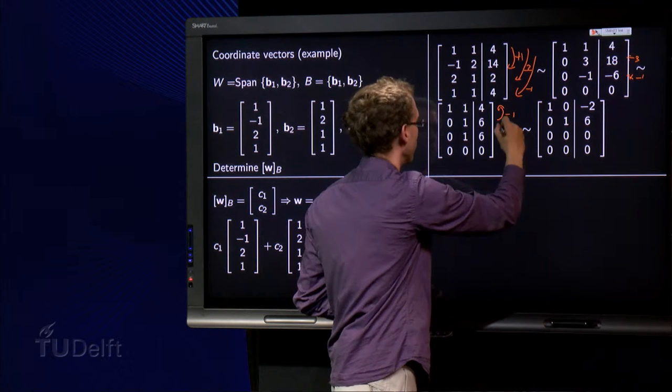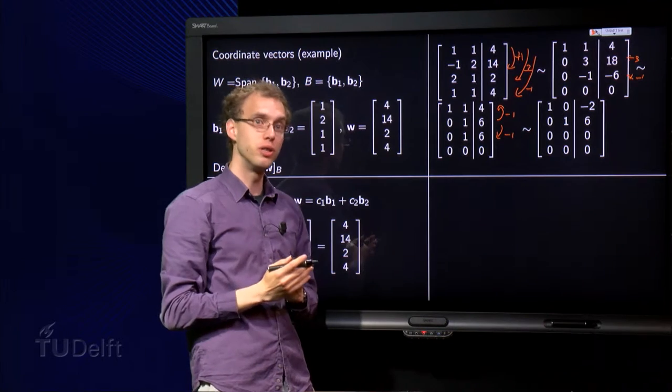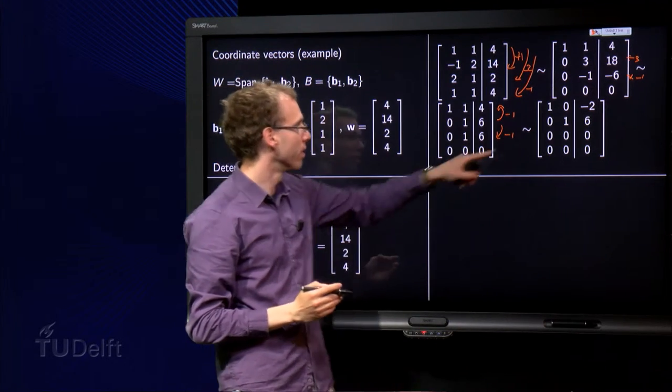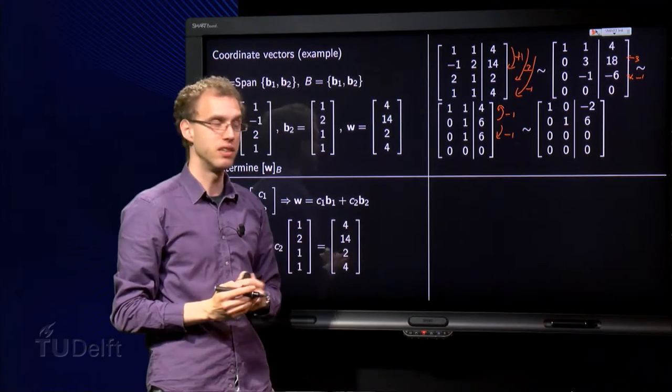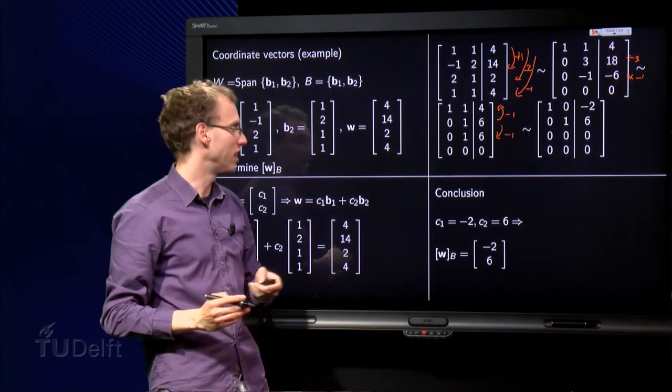We subtract once and once, and then we are in our reduced echelon form over here. We can find the solution, the vector of the solution: c1 equals minus 2 and c2 equals 6.